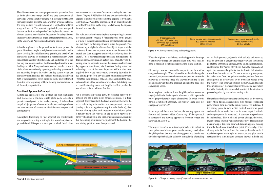A stabilized approach is one in which the pilot establishes and maintains a constant angle glide path towards a predetermined point on the landing runway. It is based on the pilot's judgment of certain visual clues and depends on the maintenance of a constant final descent airspeed and configuration. An airplane descending on final approach at a constant rate and airspeed is traveling in a straight line toward a spot on the ground ahead. This spot is not the spot on which the airplane touches down because some float occurs during the roundout/flare. The point toward which the airplane is progressing is termed the aiming point.